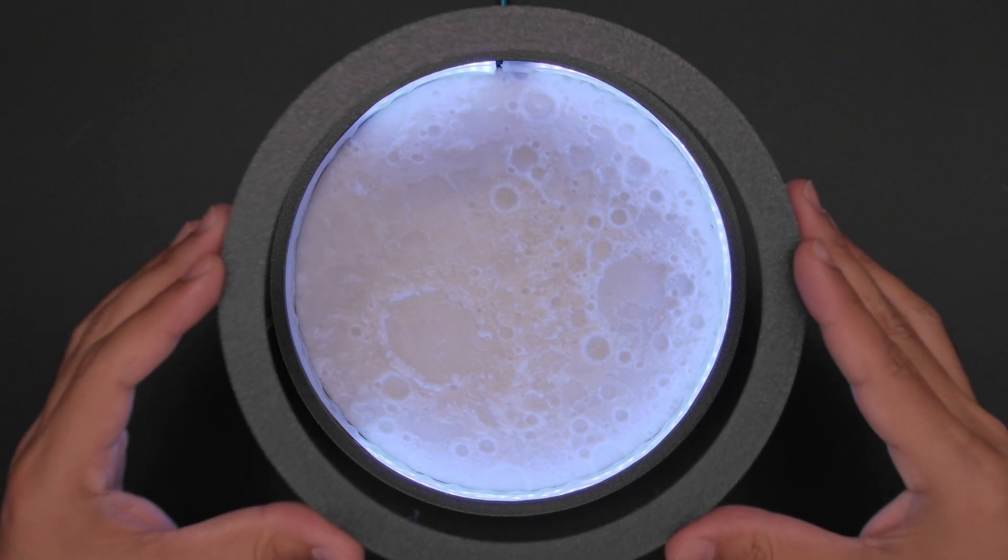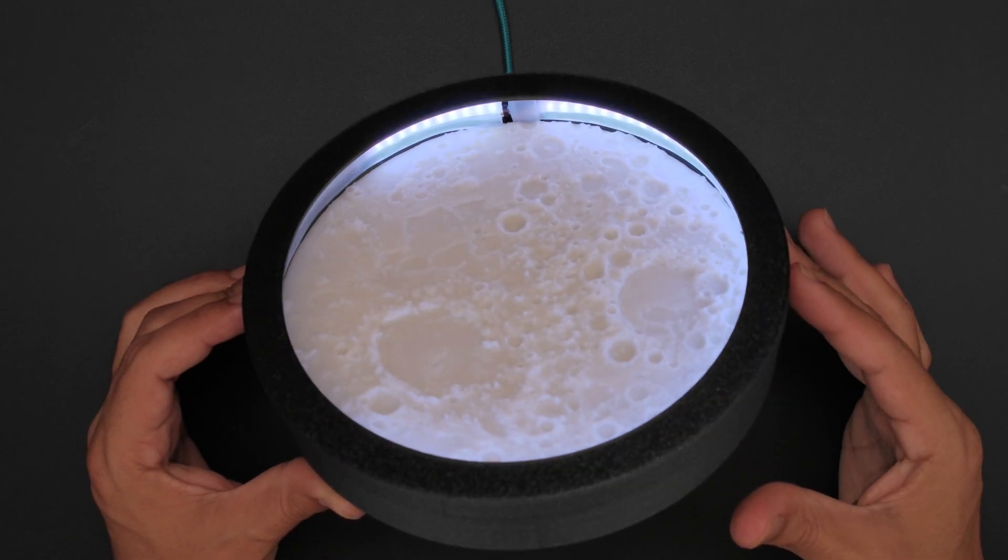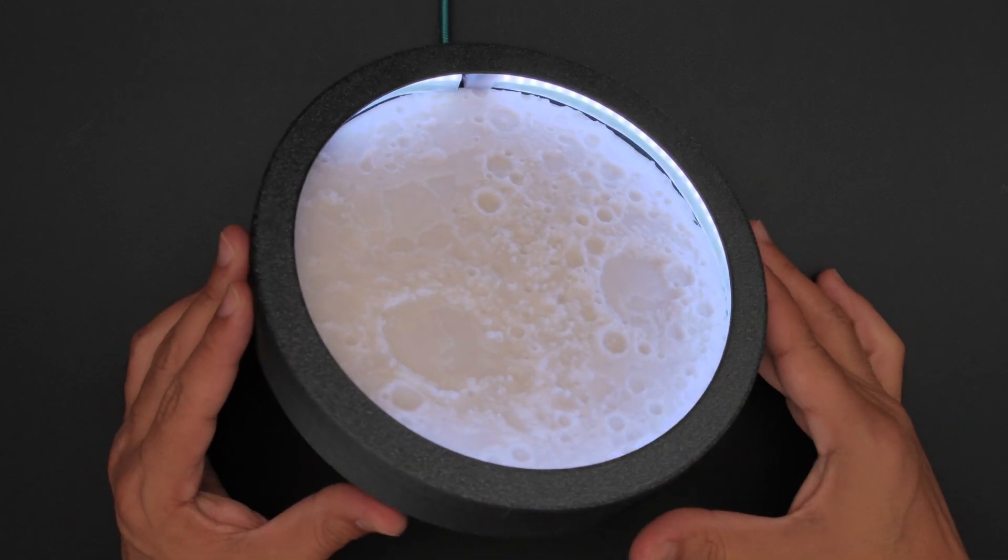A 3D printed bezel snap fits over the frame and hides any hot spots from the LEDs making a nice and smooth LED diffuser.